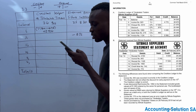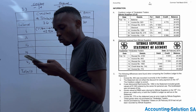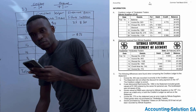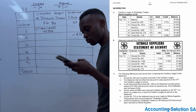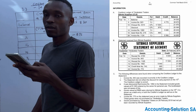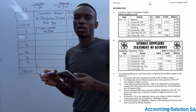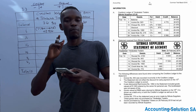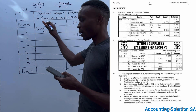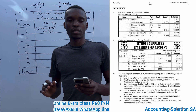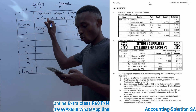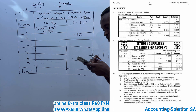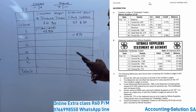Number three: It was discovered that invoice number 1062 on the statement includes goods valued R1,000 ordered by the owner for personal use, and the bookkeeper was not aware of this. When the owner purchases an item for personal use, we know it's drawings. Since it's related to the owner's business, we have to show it as drawings.